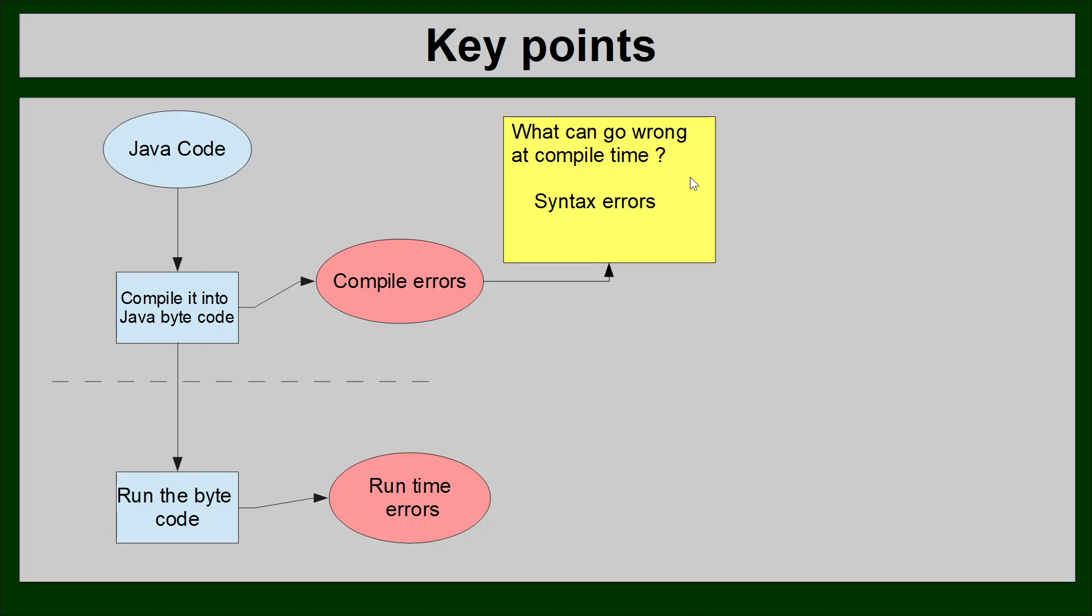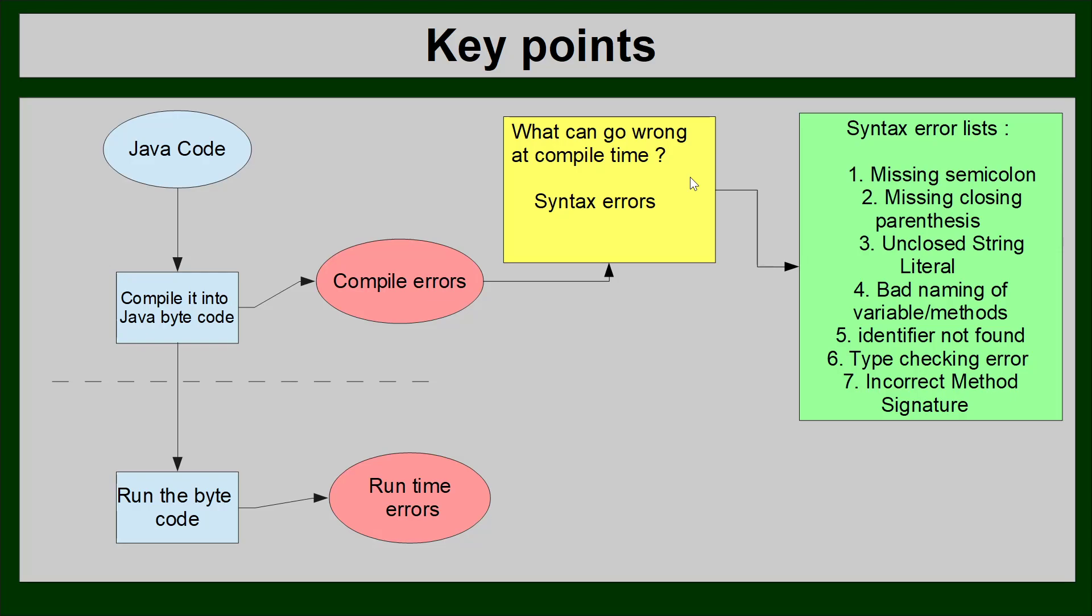When you have compile errors, we're going to quickly have a chat about what kind of errors you need to get familiar with, and mostly it's syntax errors. Things like missing semicolons, any kind of brackets or quotation marks that are being missed, bad names in terms of variables or methods, not linking up the class with the Java file name, type checking errors where you've identified a variable as an integer when in fact it's a string, or a problem with your incorrect method signature.